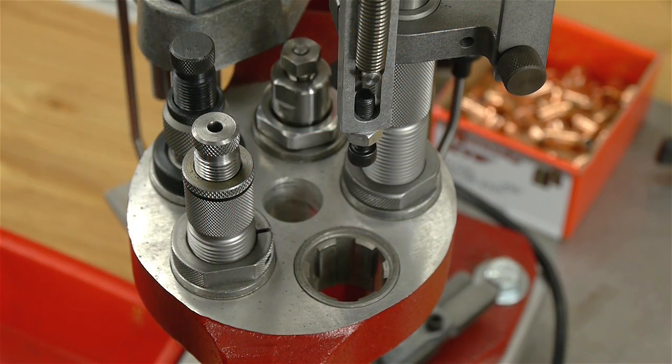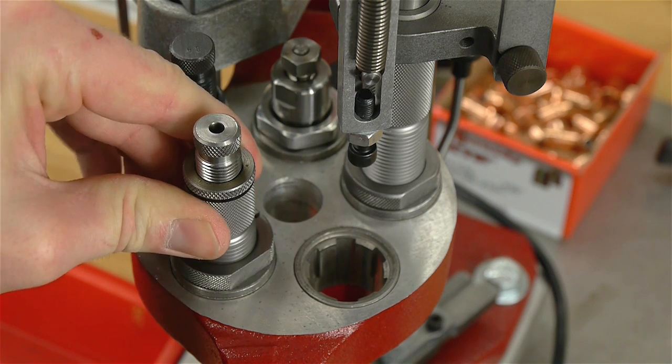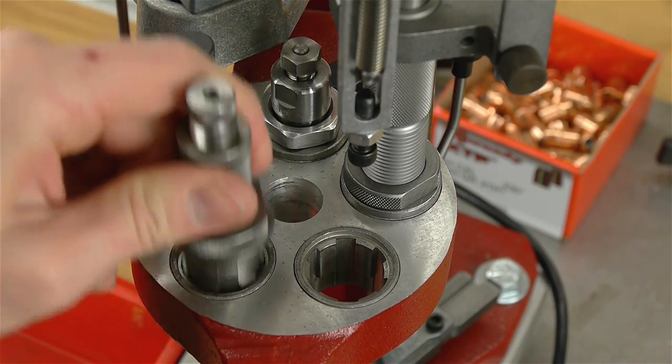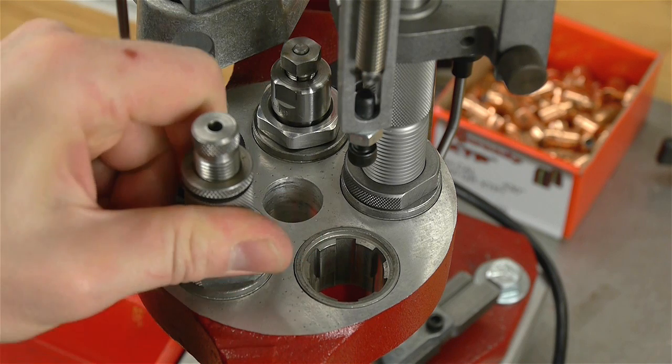So let's take a look at dies and die stations here. So as I mentioned one of the really neat things about the Hornady Lock and Load AP is this lock and load bushing system. So with an eighth of a turn we can either release a die or we can insert a die.